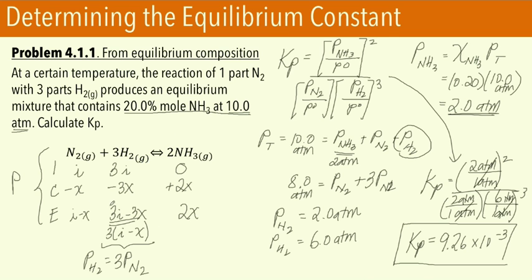Plugging in: KP equals (2 atm / 1 atm)^2 over (2 atm / 1 atm) times (6 atm / 1 atm)^3. All pressure units cancel out, and KP equals 9.26 times 10 to the negative 3. We used the ICE table strategy and took advantage of the given equilibrium composition to solve for KP.